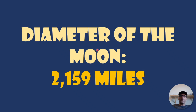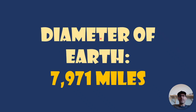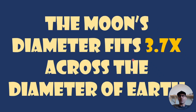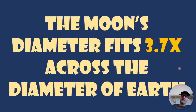The diameter of the moon, according to mainstream science, is 2,159 miles and the diameter of Earth is 7,971 miles. With that data, we can do a little bit of math and we know that the moon's diameter fits 3.7 times across the diameter of the Earth. So don't think too much about that — keep it in the back of your head.